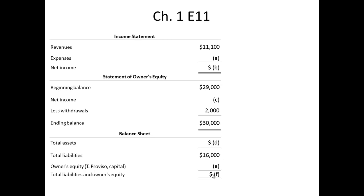Keep in mind that the preparation of the three financial statements is important — the order in which they are prepared — because each statement requires something from the previous statement. For example, the income statement requires us to solve for net income, which is then used on the statement of owner's equity to solve for the ending balance of owner's equity. Then we use that ending balance of owner's equity to solve for the balance sheet.